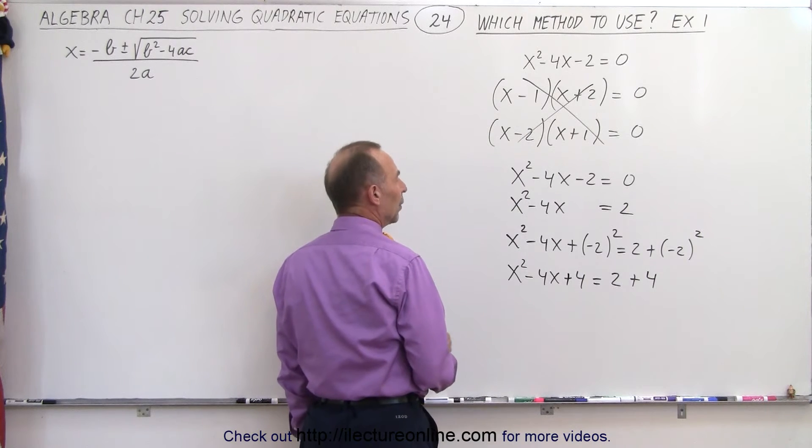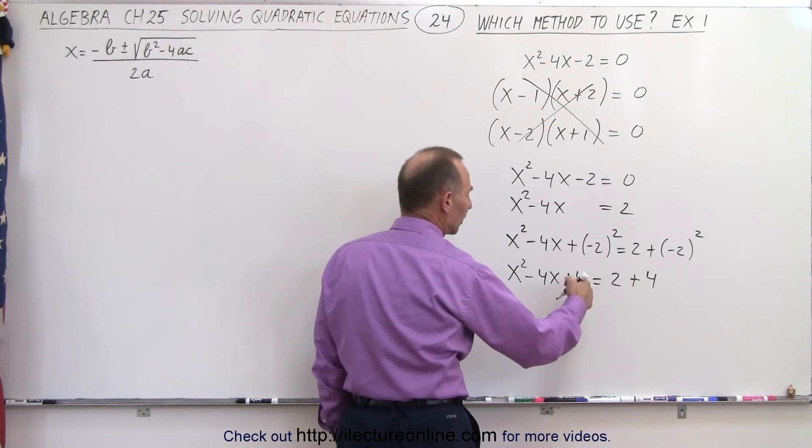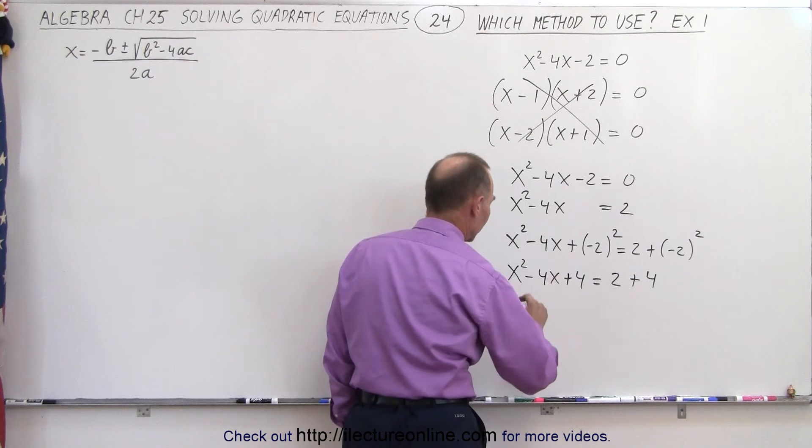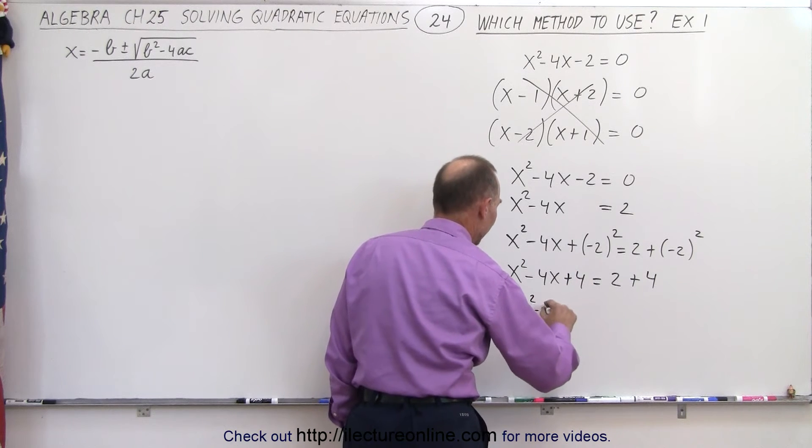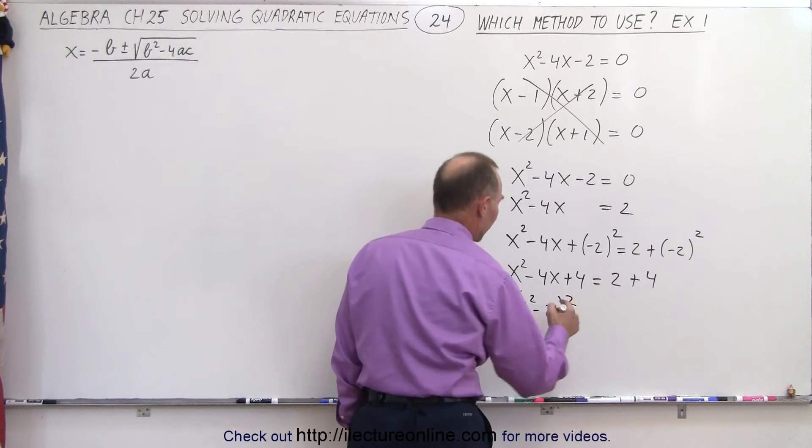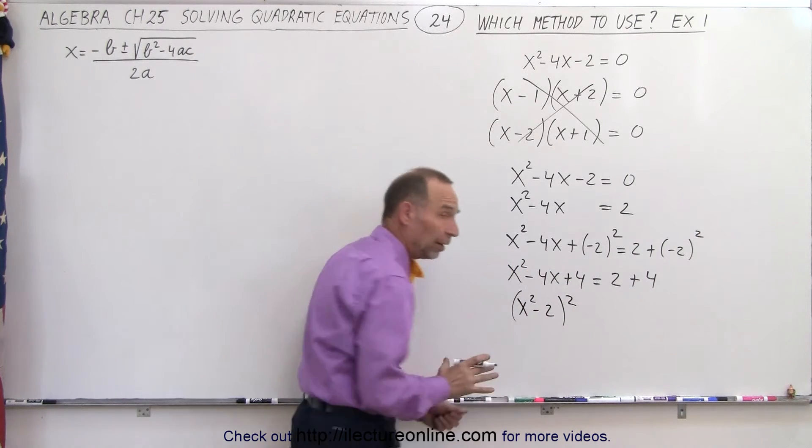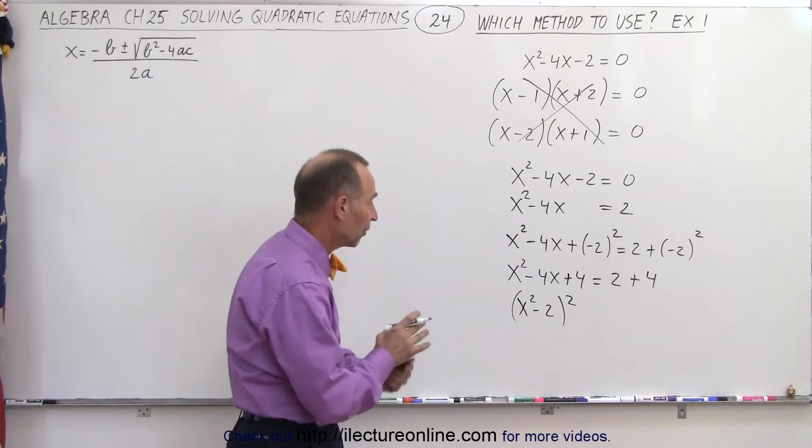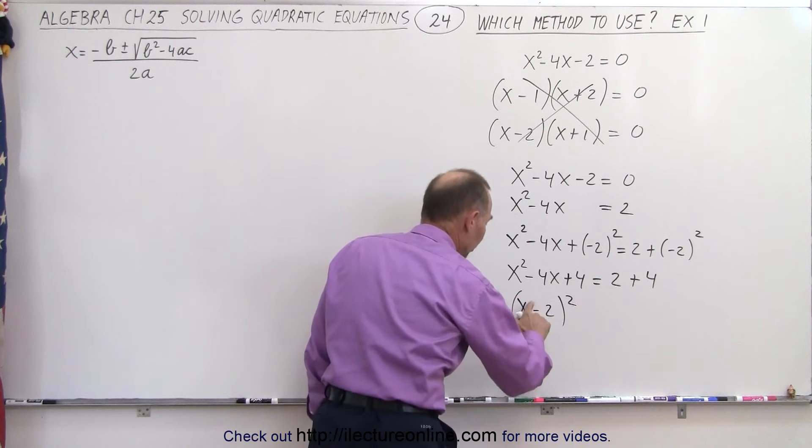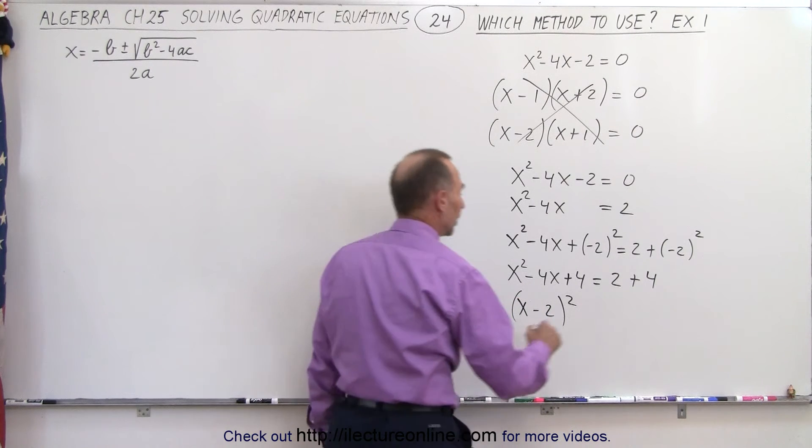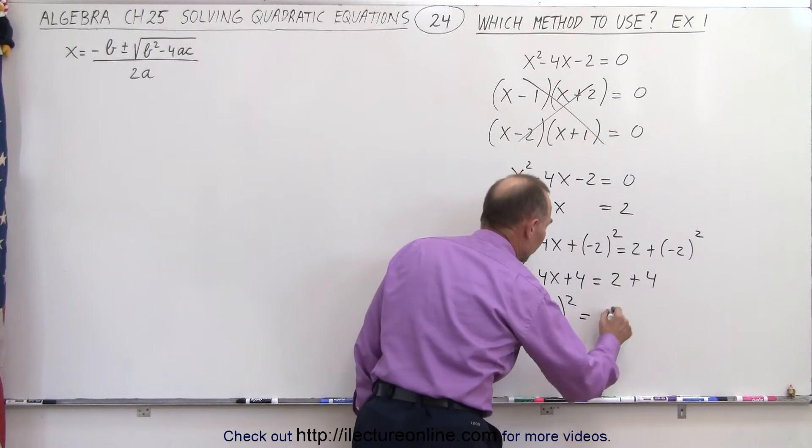And then we can go ahead and we can factor this. So this becomes x squared minus two quantity squared. So factor meaning since this is a perfect square, we can simply write as the square of a binomial. And of course this will be x minus two quantity squared is equal to two plus four which is six.